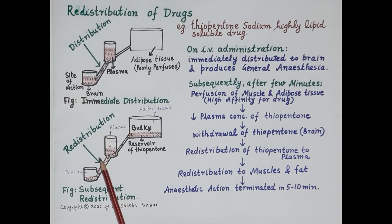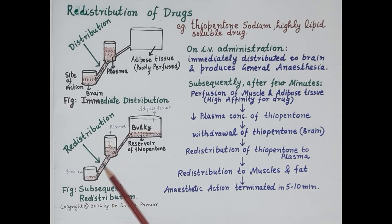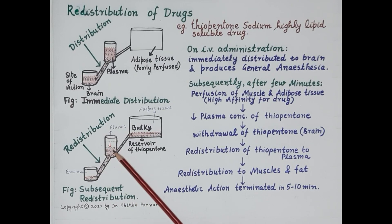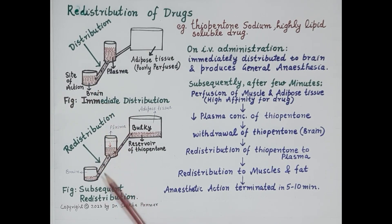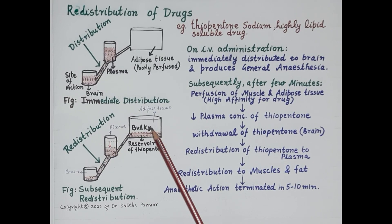As soon as the plasma concentration of thiopentone sodium falls, the drug is withdrawn from the brain back to the plasma, as shown by the arrows. Thiopentone sodium flows from the brain towards the plasma. So distribution is the movement of drug from plasma to the brain, whereas redistribution is the movement of thiopentone sodium back from the brain to the plasma. From the plasma, thiopentone is again redistributed to the adipose tissue and to the muscles.